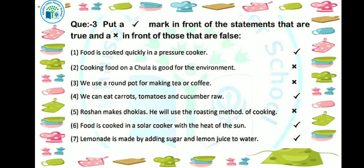Next: Roshan makes dhokla and will use the roasting method of cooking. No, this sentence is false — because to make dhokla the steaming method is used.